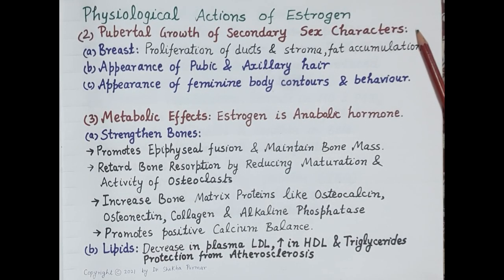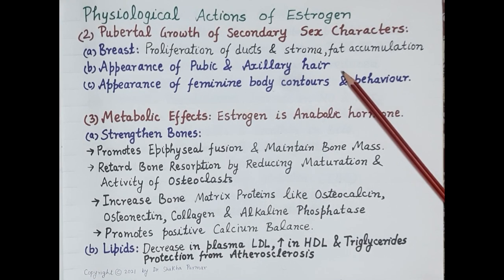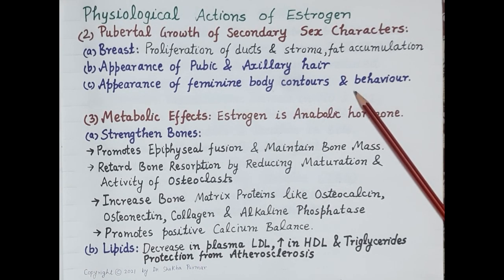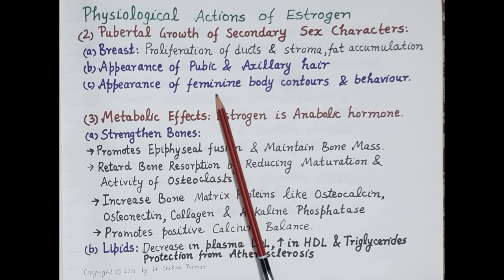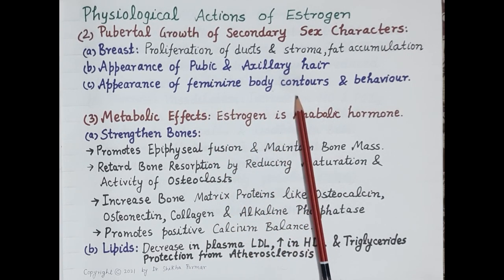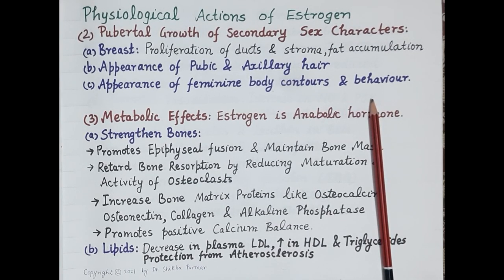Estrogen is required for pubertal growth of secondary sexual characteristics. It promotes growth of the breast by mediating proliferation of ducts, stroma, and accumulation of fat. It induces appearance of pubic and axillary hair, and mediates deposition of female-pattern body fat on the breast, thighs, etc., inducing feminine body contours. Apart from this, estrogen affects behavior, plays a role in emotional well-being, and deficiency of estrogen in post-menopausal women causes mood swings.